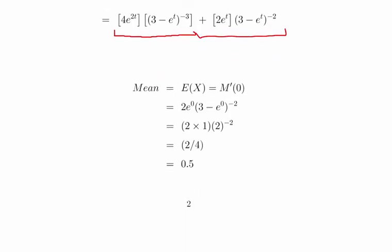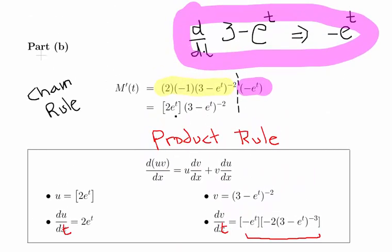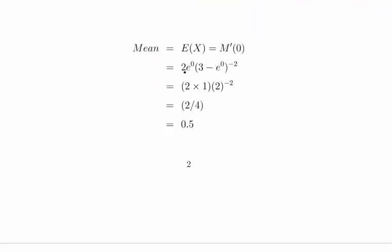Now we're nearly there. We evaluate both the first and second derivatives at t = 0 to get the mean and variance. For the mean, evaluating the first derivative at t = 0: 2 × e^0 = 2 × 1, and (3 − e^0)^(−2) = (3 − 1)^(−2) = 2^(−2) = 1/4. So we get 2 × (1/4) = 2/4 = 0.5. That is the mean.